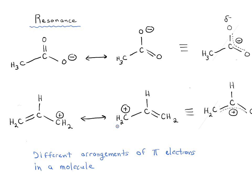In a previous video we introduced the concept of resonance in organic chemistry. Resonance forms are different ways of arranging the pi electrons in a molecule — referring to double bonds as well as electrons which can form double bonds, such as lone pairs. We're moving pi electrons around, and as long as we're not breaking single bonds or violating the octet rule, we're okay.